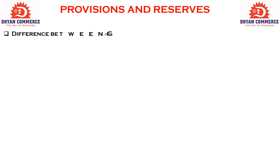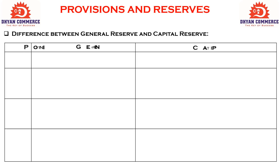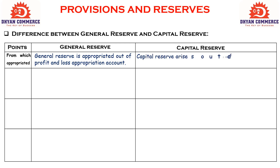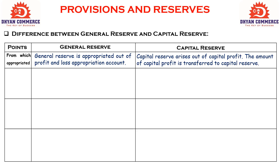Now we take another difference — difference between General Reserve and Capital Reserve. First point — from which account it is appropriated. General reserve is appropriated out of Profit and Loss Appropriation Account. Capital reserve arises out of capital profit; the amount of capital profit is transferred to capital reserve.